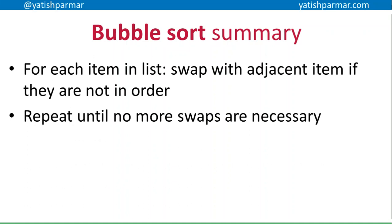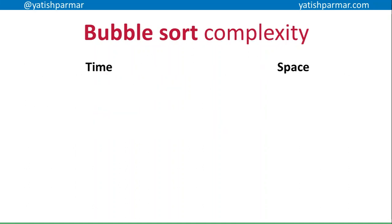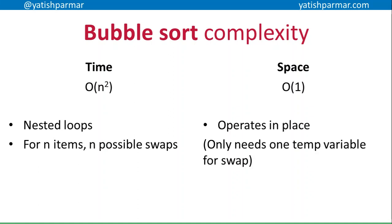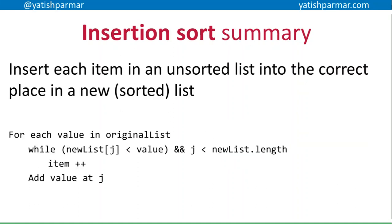The first one is bubble sort. If you remember, bubble sort involves swapping adjacent items in the list if they are not in order, and then repeating until no swaps are necessary. Basically, we've got two loops nested inside each other, so therefore the time complexity is going to be polynomial — O(n²). In terms of space complexity, it's O(1), because there's only one temporary variable needed for the swap. It doesn't matter how many items you have — you still only need one extra variable.